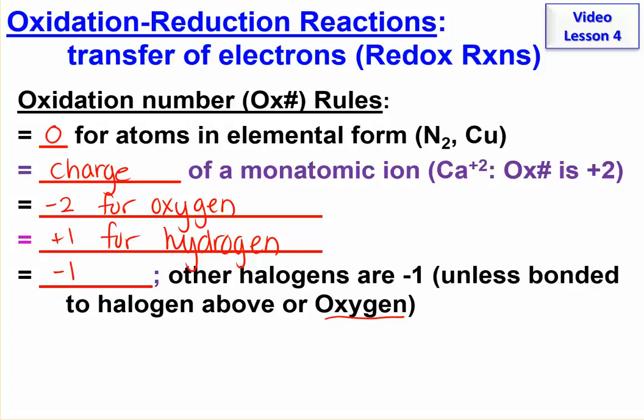It is minus one for fluorine always, and other ones are minus one unless they're bonded to something above them or oxygen. And oxygen is the common one because we know all of those polyatomic ions like chlorate. In this case, this chlorine will not be minus one, it's bonded to oxygen, and we'll have to see what to do with those.